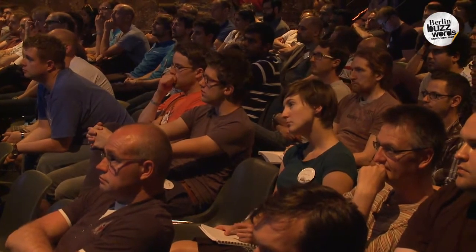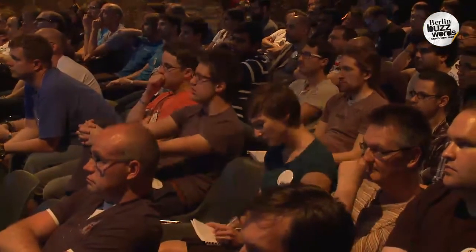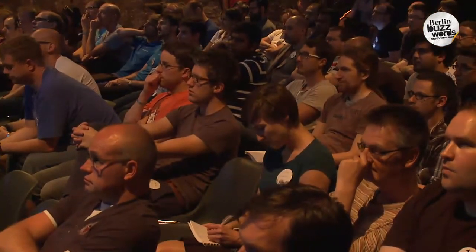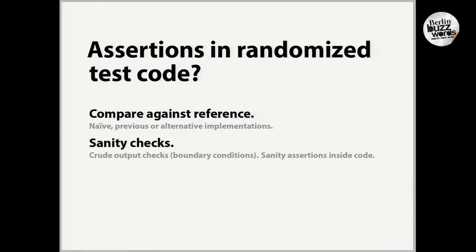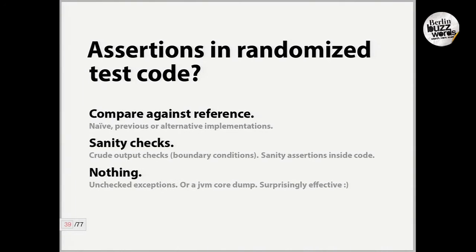The next thing you can do is sanity checks — basically throw some random input at your software and wait for it to hit the fan. Throw the randomized input at your program and wait for an assertion to happen. If it happens, correct the bug. If it doesn't happen, fine — nothing wasted. And lastly, you can assert nothing at all. You just wait for an unchecked exception or a JVM crash, which happens a lot in Lucene. It's surprising how the world actually spins with all the JVM bugs that we discover notoriously.